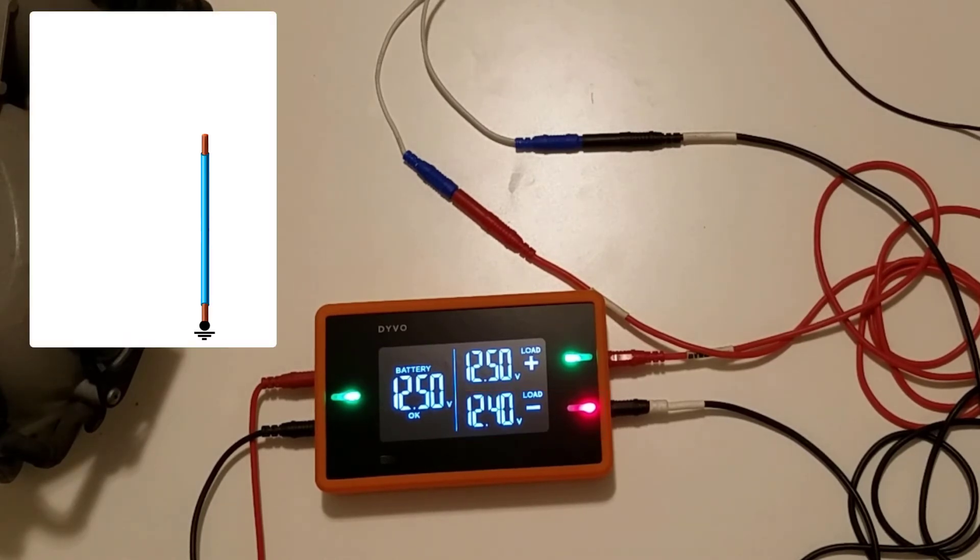Now the difference in this case where we have high resistance versus where we had a complete open: if you have an open on the circuit, we read full battery voltage on the ground side, so this would have read 12.50 volts in this case. But because we're not reading full battery and we're reading 12.40 volts, that means that we have some ground connection, it's just not a good ground. And that means that we have high resistance in the circuit.